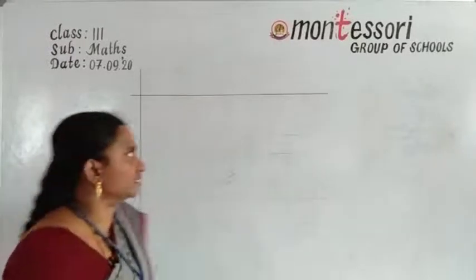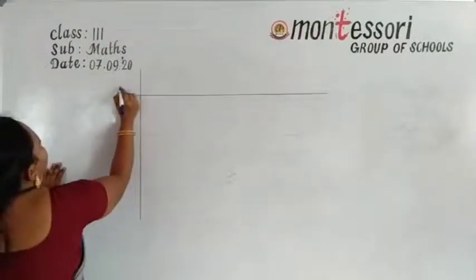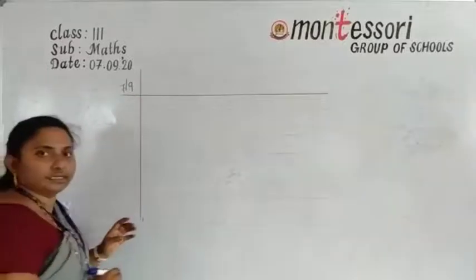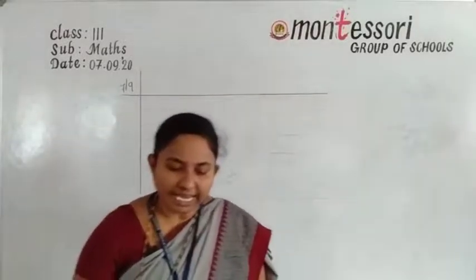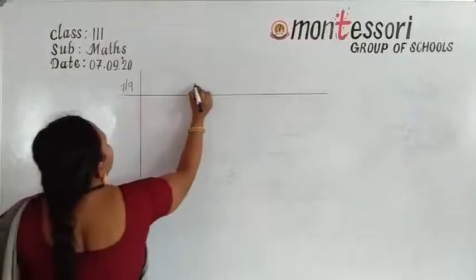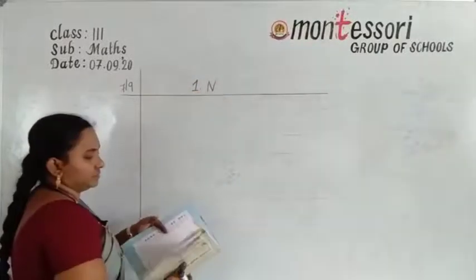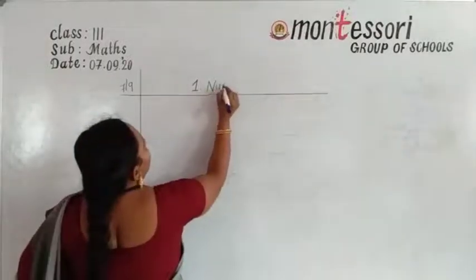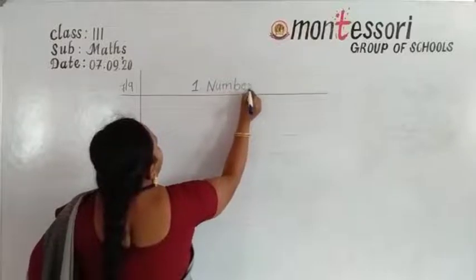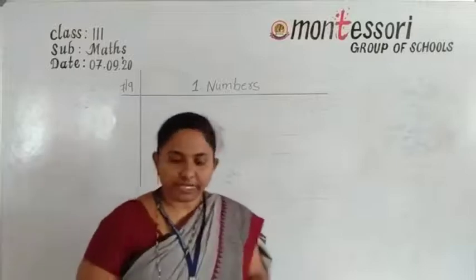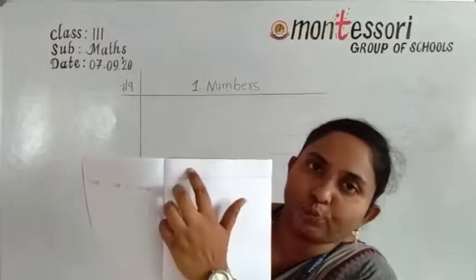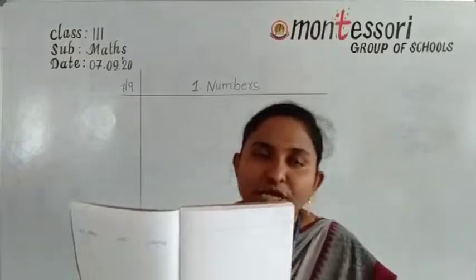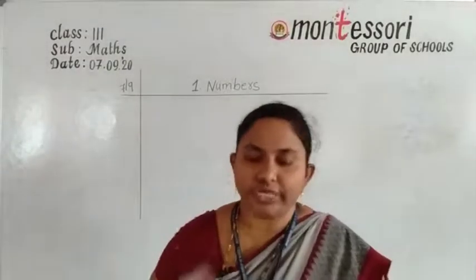Today's date is 7/9 — 7 is the date and 9 is the month. Now write the chapter number: Chapter 1 — Numbers. Write with pen, with neat handwriting. You are studying third class, so write with pen.